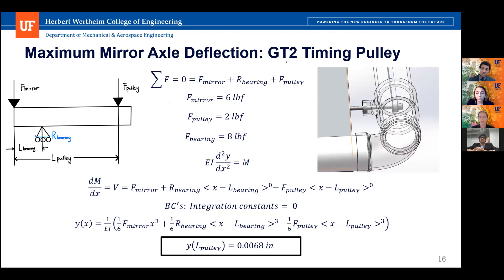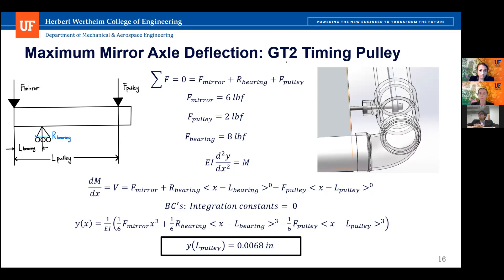The most stressed component in the mirror assembly would be the mirror axles, since each axle bears the weight of a cradle and the tension of the belts. Singularity functions were used to determine the deflection of the pulleys, because significant deflection would hamper normal operation. The deflection of the shaft, as shown in the free body diagram, comes out to 0.0068 inches, which was determined to be insignificant for all mirror axes.